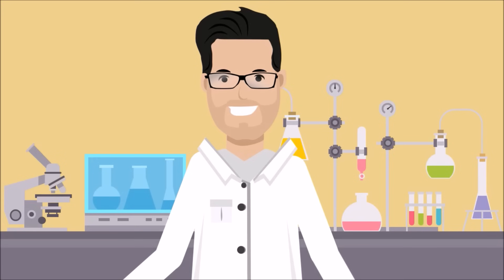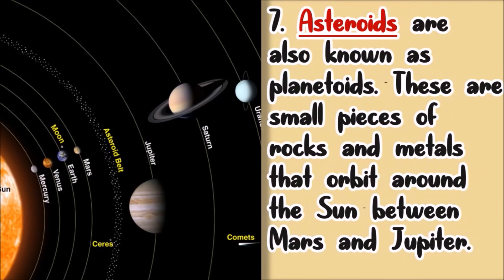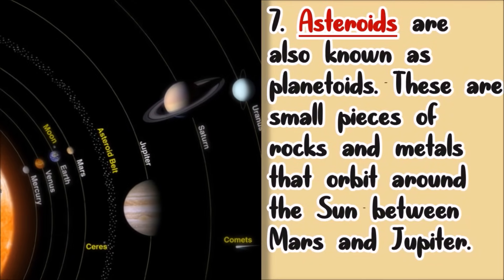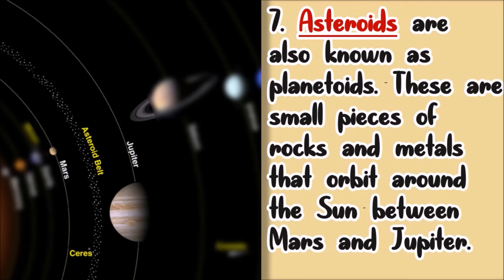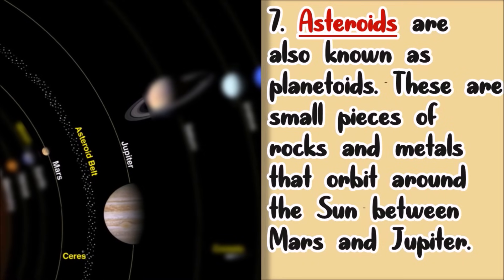What about asteroids? Asteroids are also known as planetoids. These are small pieces of rocks and metals that orbit around the Sun between Mars and Jupiter.